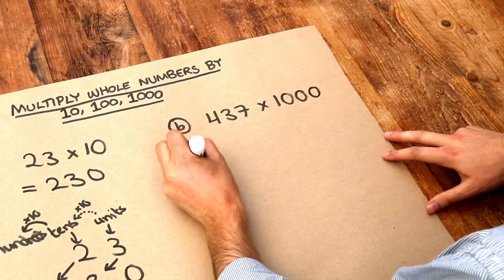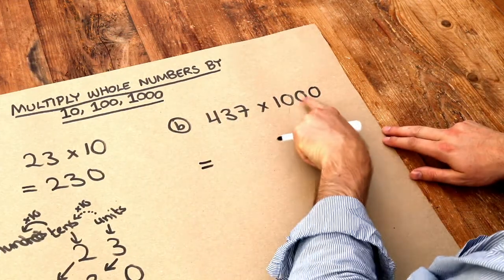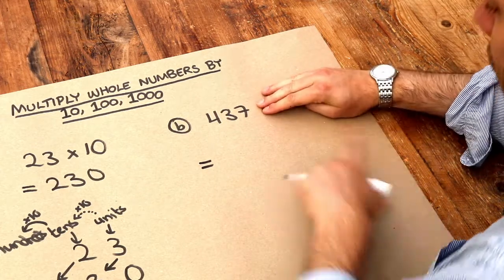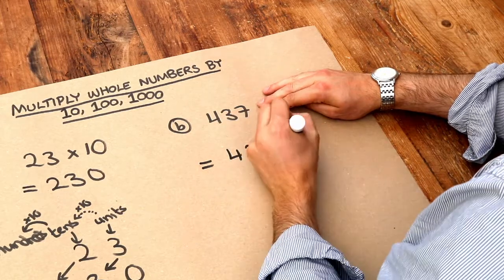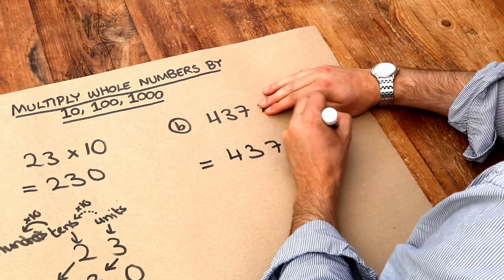What about this one? Well, we've got three zeros on the end of that one, and therefore we put three zeros on the end of that number. So 437, 0, 0, 0, three zeros.